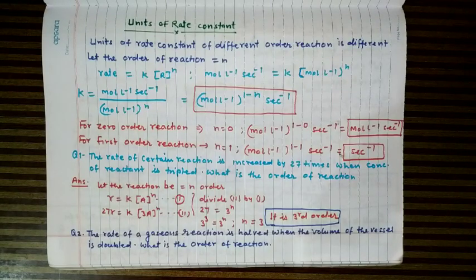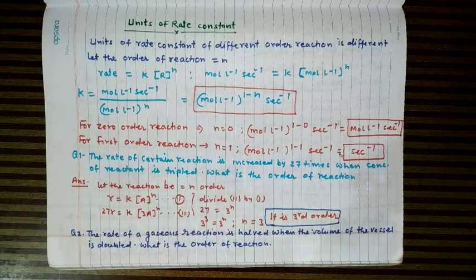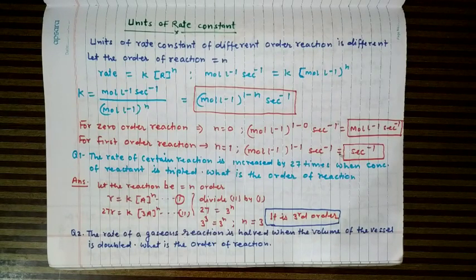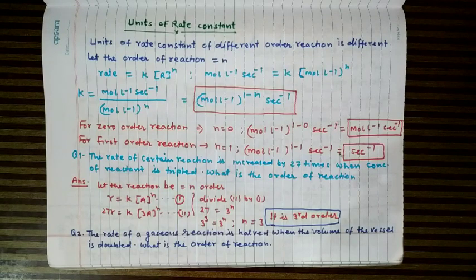Today we will learn about the units of rate constant of different order reactions. In the previous video, you saw that every reaction has a definite value of rate constant, which depends upon temperature but does not depend upon concentration of reacting species. The rate constant is also called the specific reaction rate. Now we will see what is the unit of rate constant and how it can be determined for different order reactions.